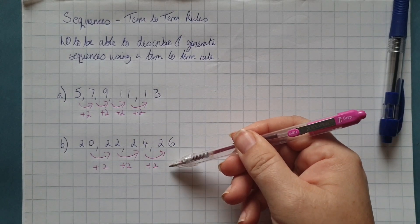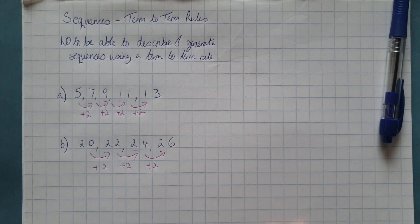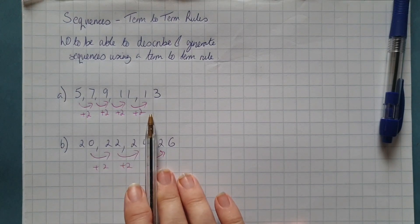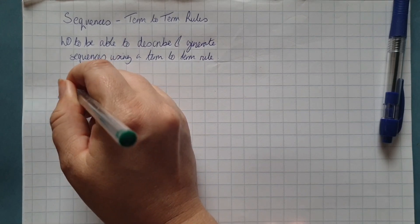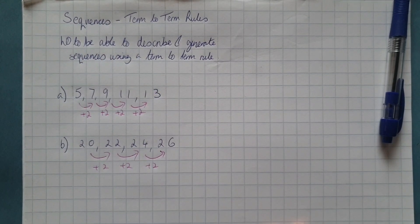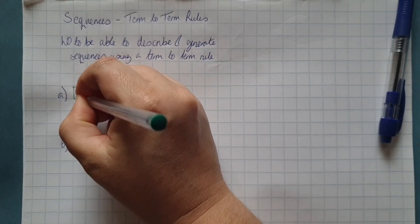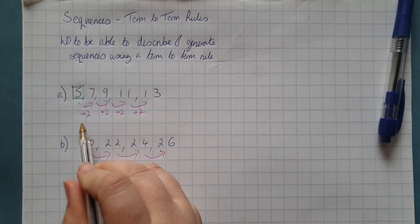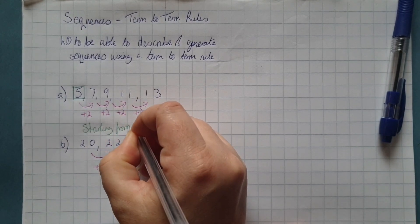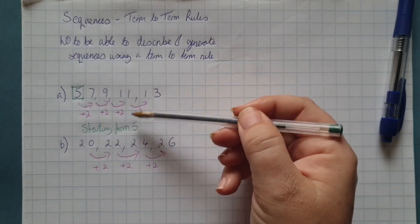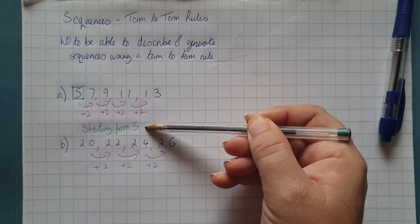But this sequence is a different sequence to that one. The key with the sequences is not only do we need to know the steps going up or down as we move from one part of the sequence to the next, we also need to know where we start. So this sequence, we're going up in 2s, starting from 5. So the term-to-term rule is: starting from 5, add 2.